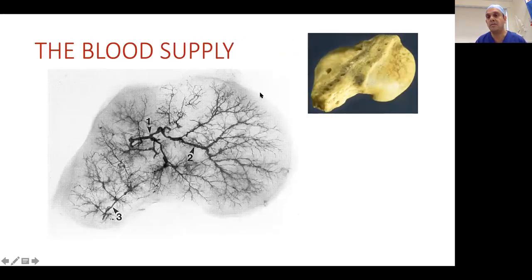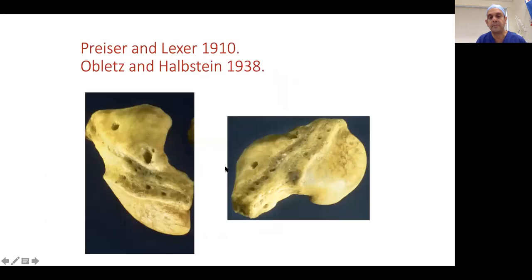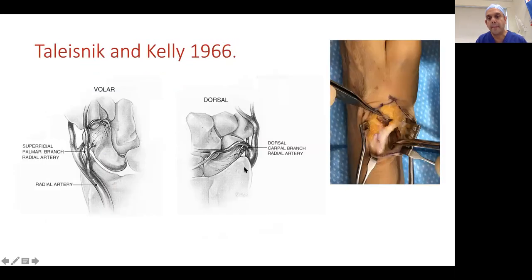Now let's look at blood supply — very important for exams and practice, as the scaphoid can have avascular necrosis. The dorsal carpal branch gives retrograde supply to the proximal pole. On the volar side, the radial artery goes under the first extensor compartment, gives a dorsal carpal branch, and continues as a superficial palmar branch. Some blood supply to the distal pole and base comes from the superficial palmar branch. The dorsal carpal artery provides the main supply — all supply to the proximal pole comes through the dorsal carpal branch.